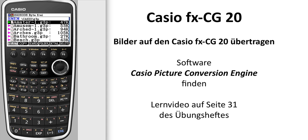Now you can transfer to this folder from your desktop PC into the folder Casio G3P your pictures, but the pictures must have the format G3P.